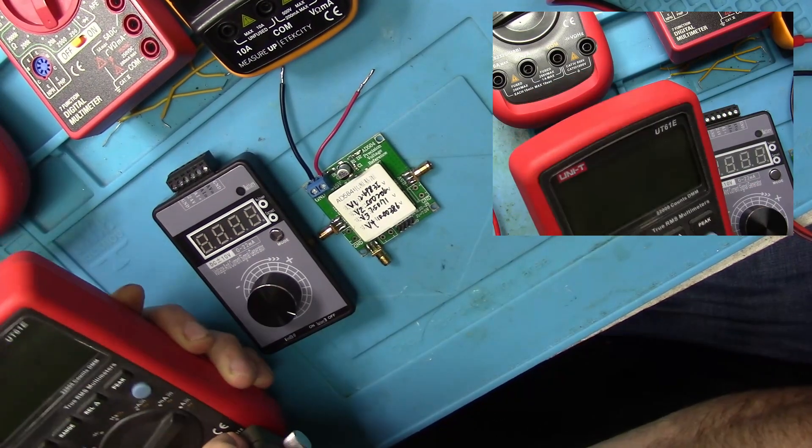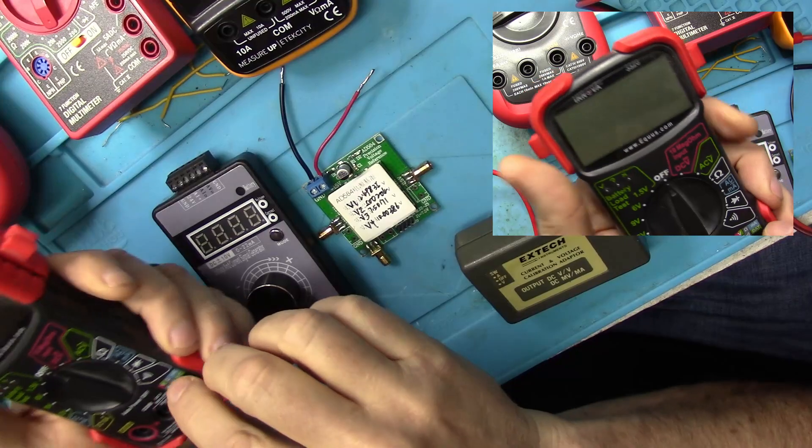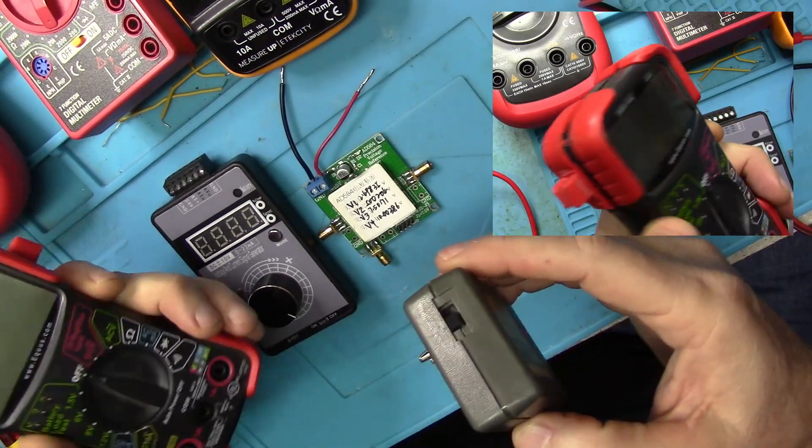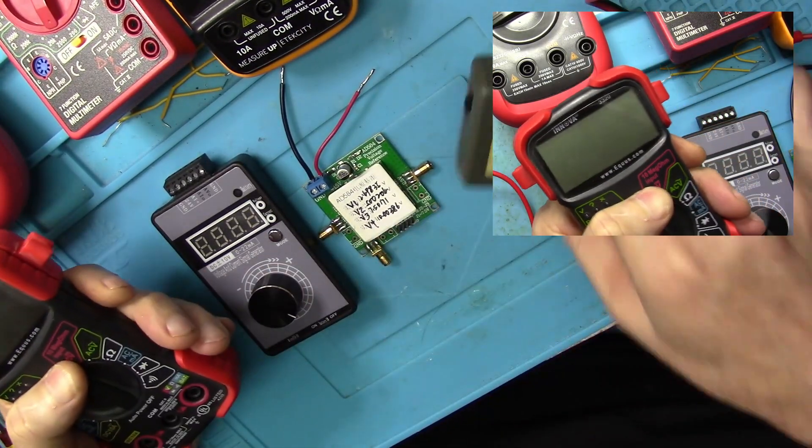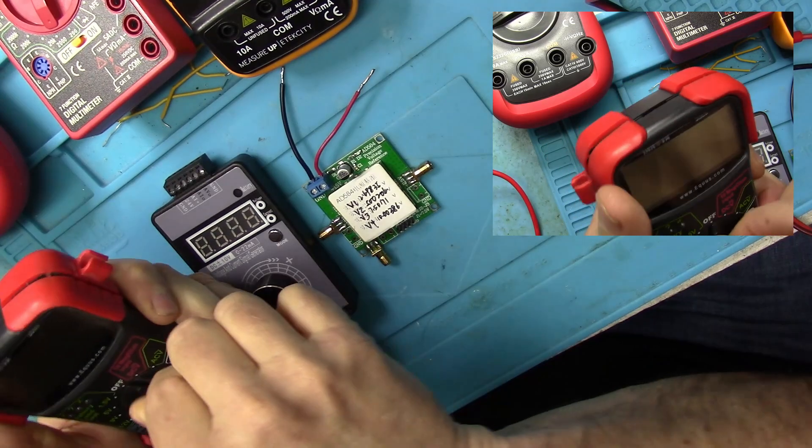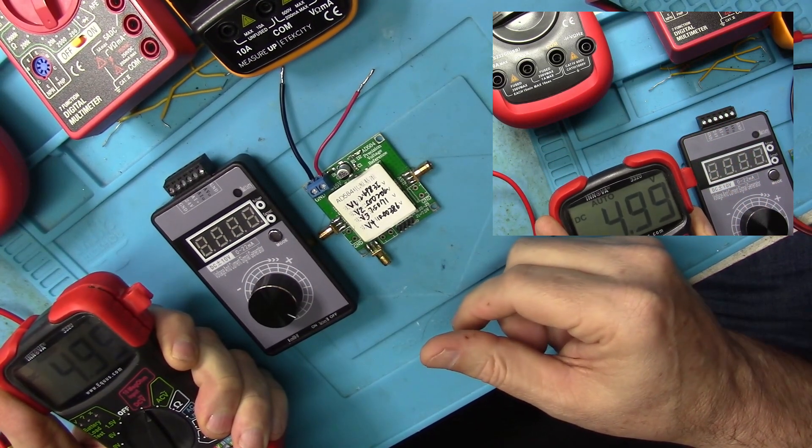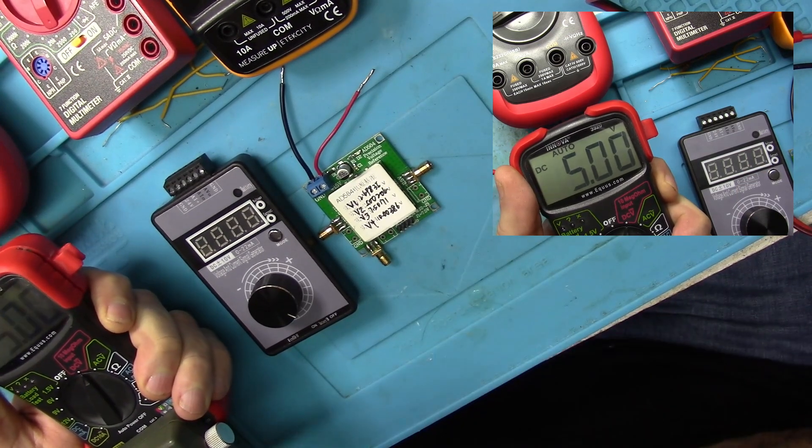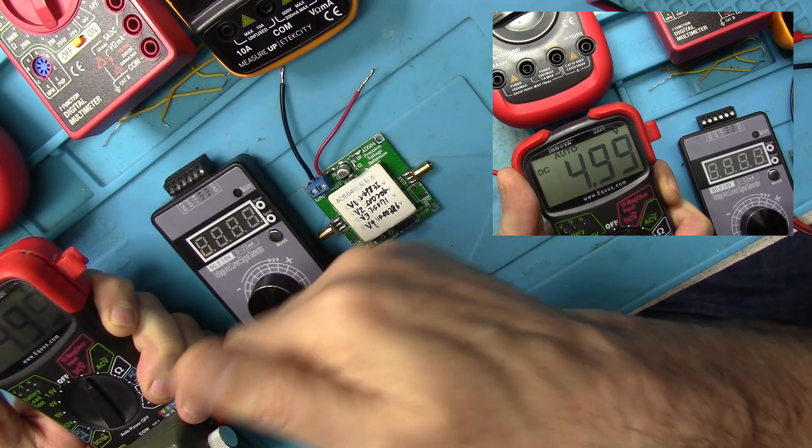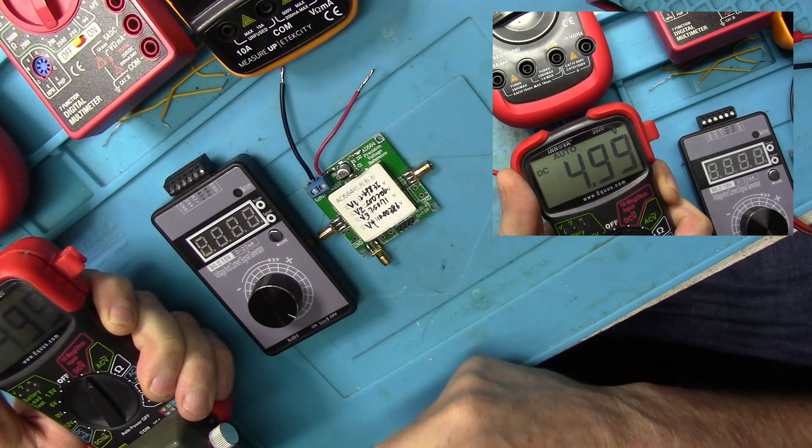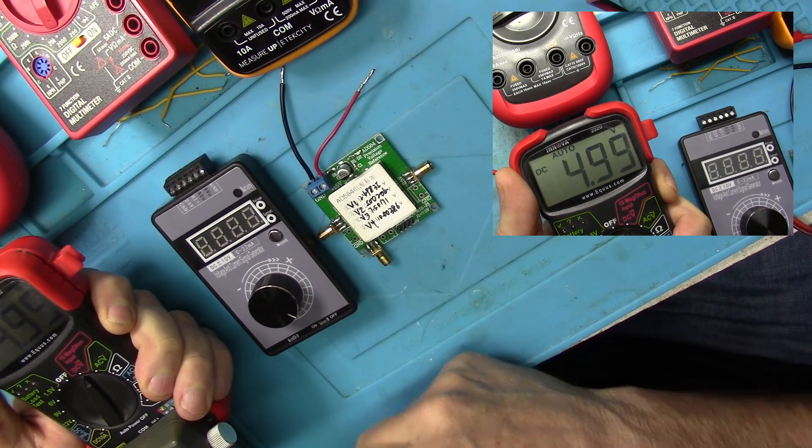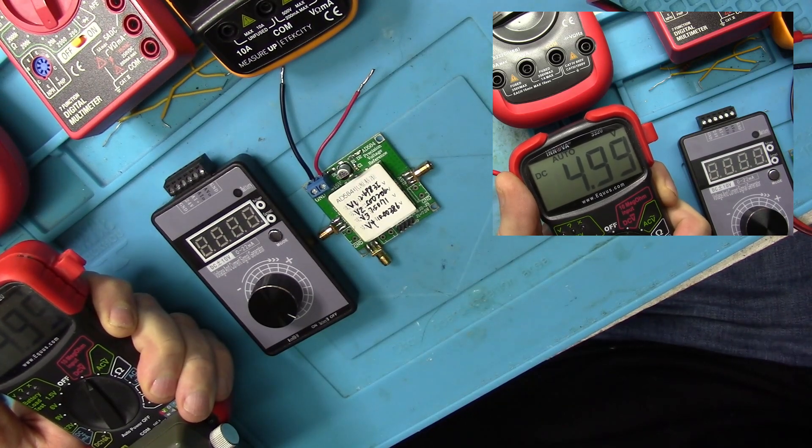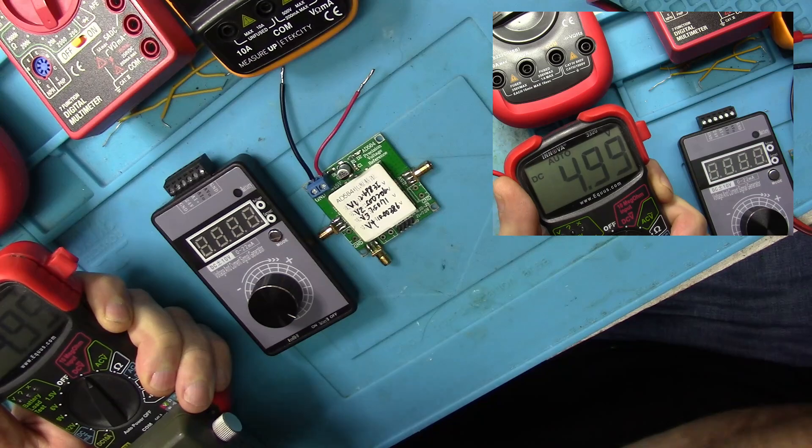Let's try a different meter. This is a low-end, fairly cheap one. In fact, the case is coming off of it. 4.99. You know, for a cheap meter, that's not bad. In fact, it's flipping back and forth between 5 volts. So that's actually pretty impressive. So now we've got 2 meters, both saying 5 volts. So we can pretty much feel confident that we're looking at 5 volts.